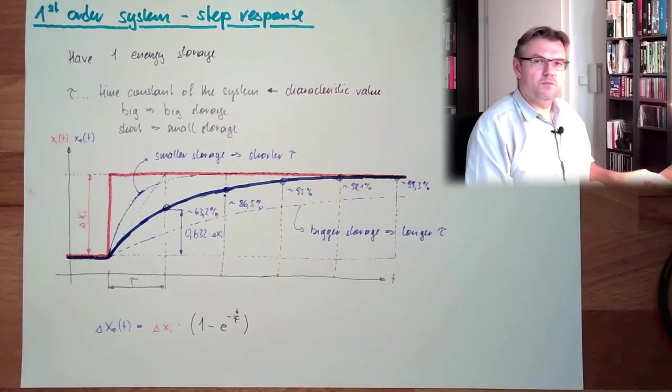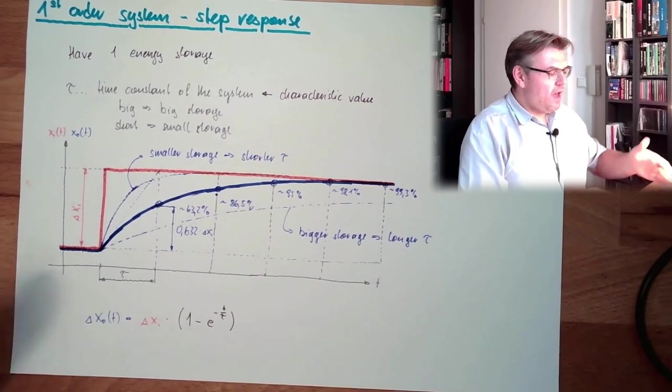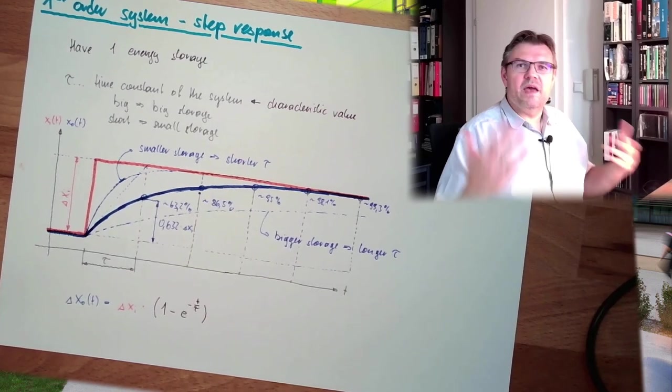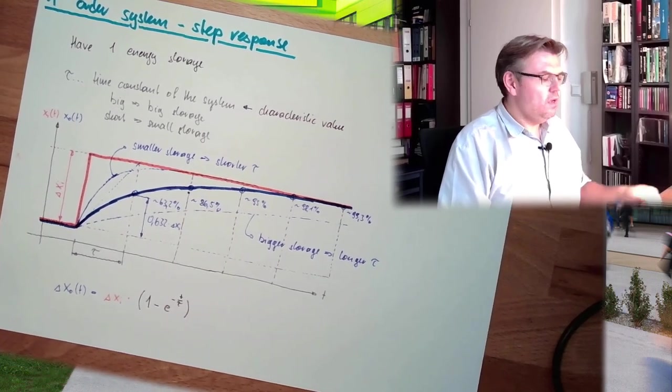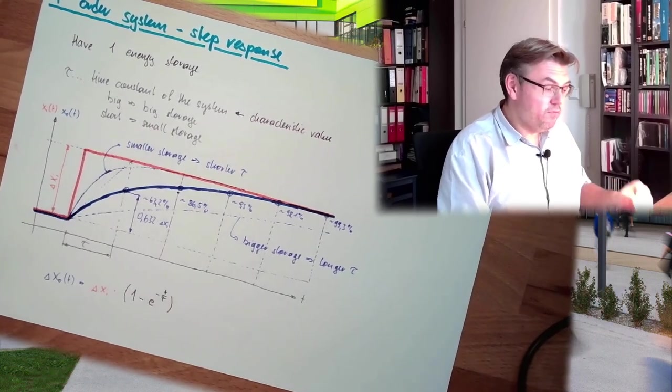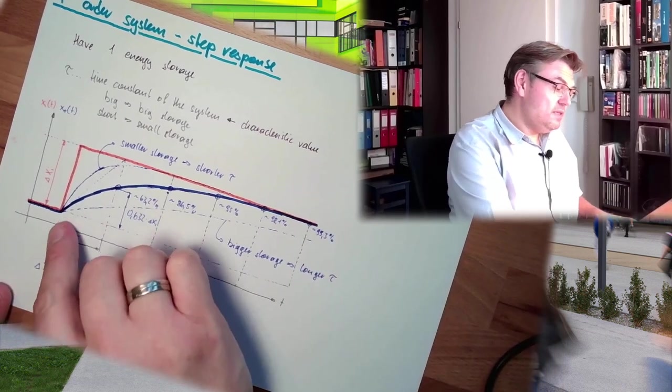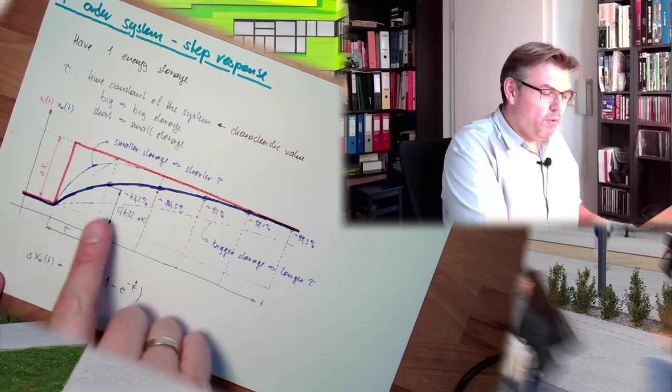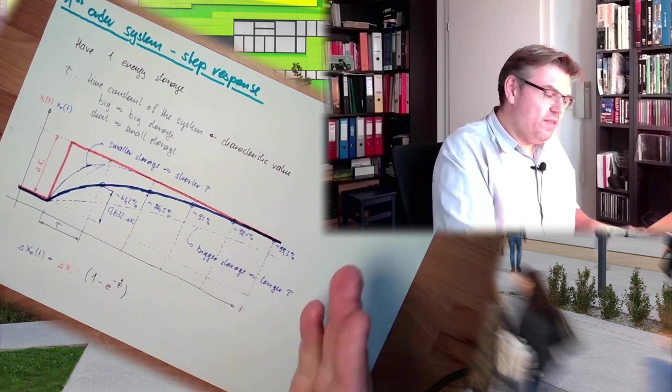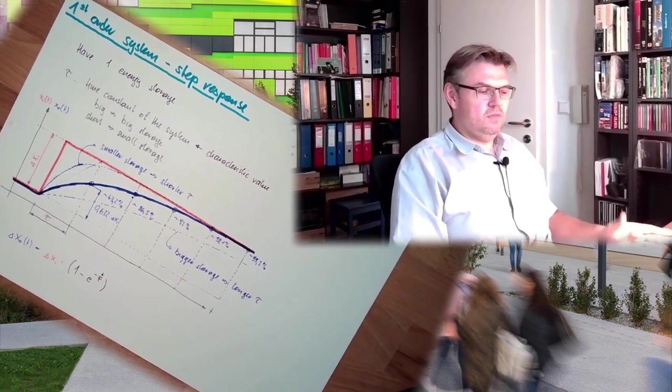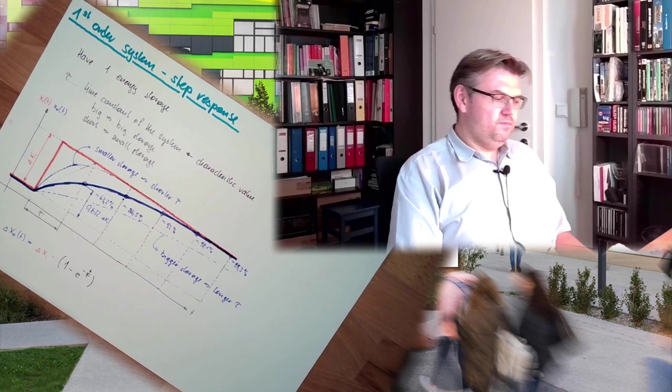If I know it's a system first order, and I know the time constant, I know how the system first order is behaving. And I can read the time constant out of the step response by simply using this, or wait until we are there and then measure 5 times time constant. That are the two possibilities.